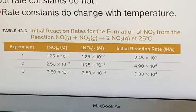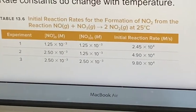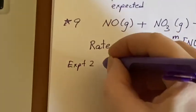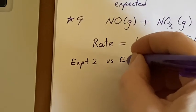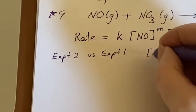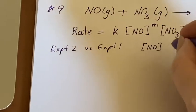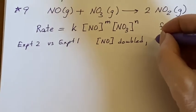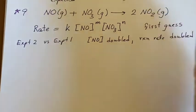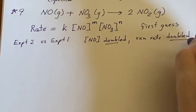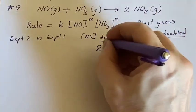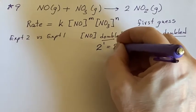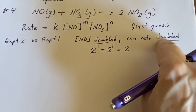How did it change? Oh, this is double that. So this was double when this was doubled. I'm comparing experiment two versus experiment one. The difference is that the concentration of nitrogen monoxide doubled, and the result was the reaction rate doubled. Two to the first is the same as two to the first, it's two.